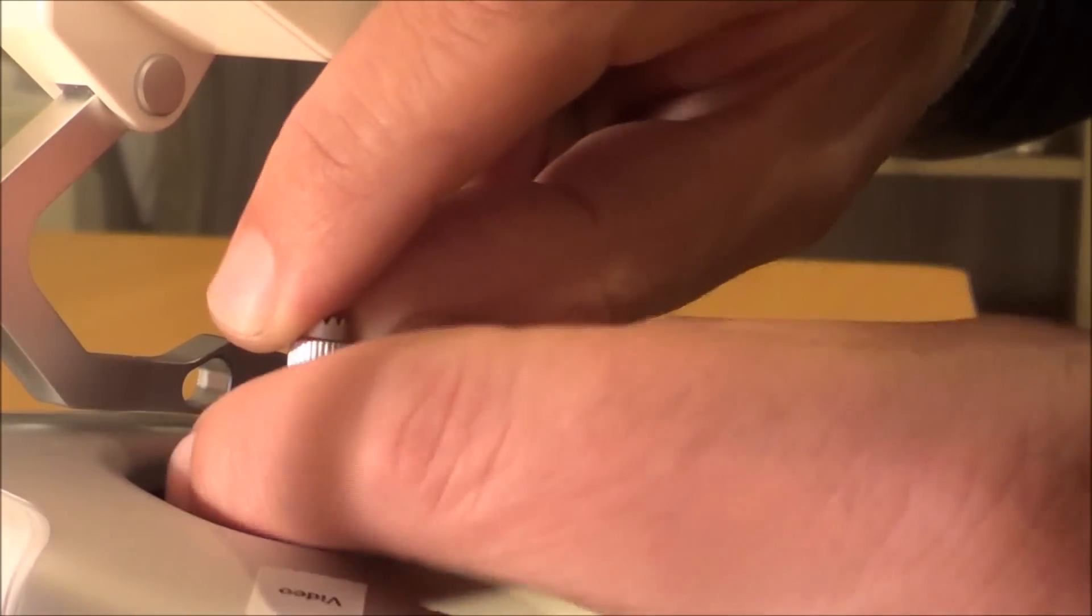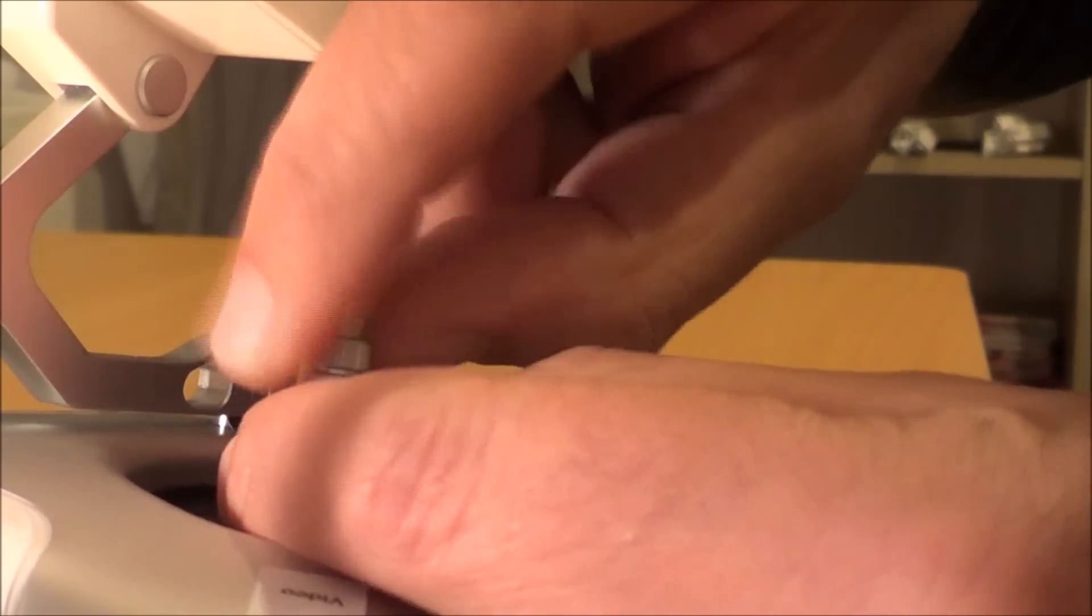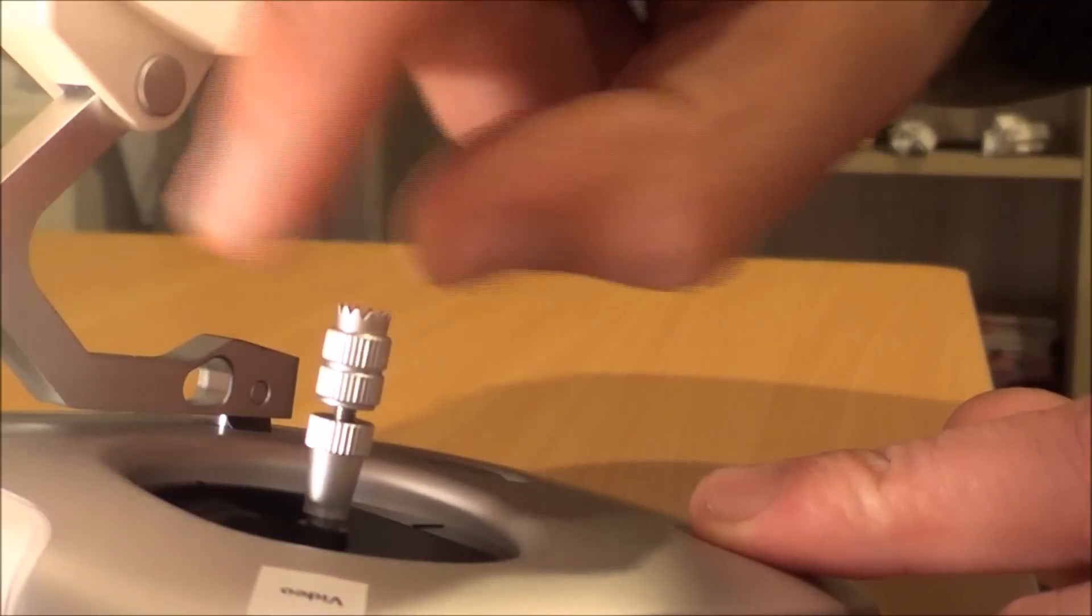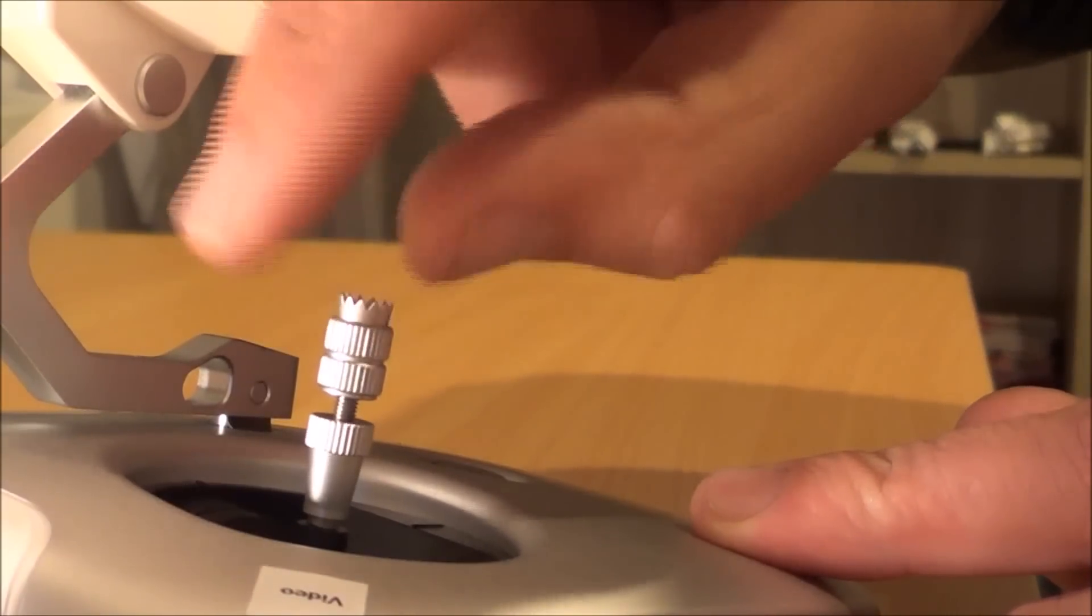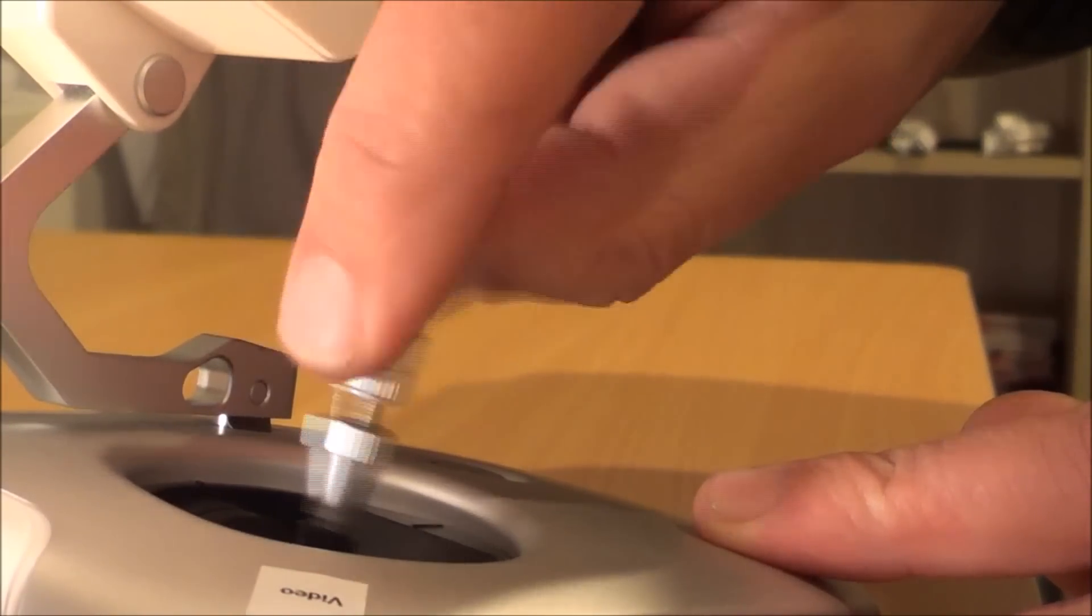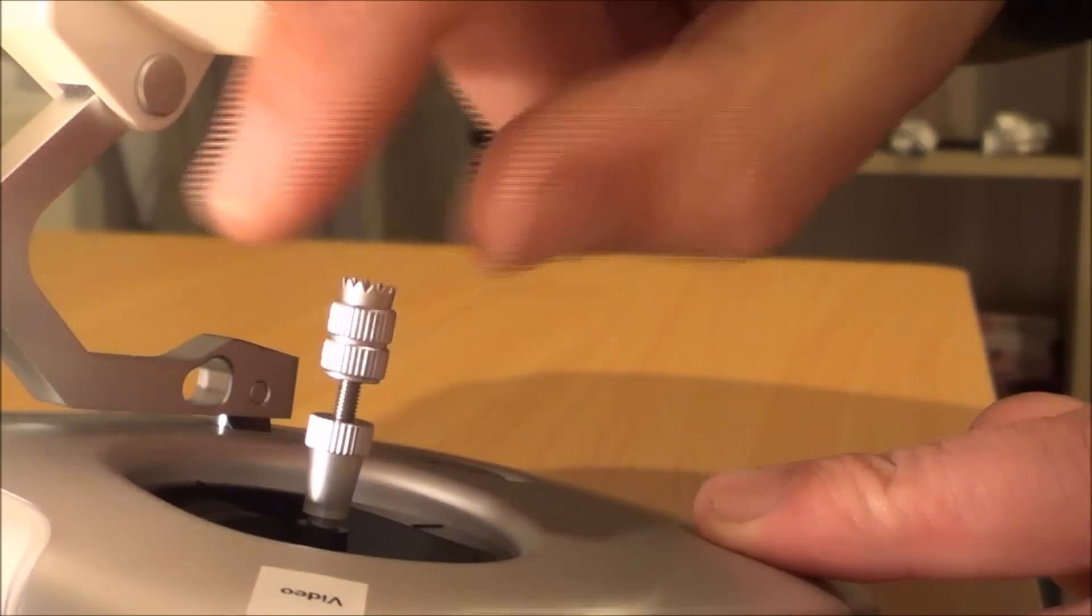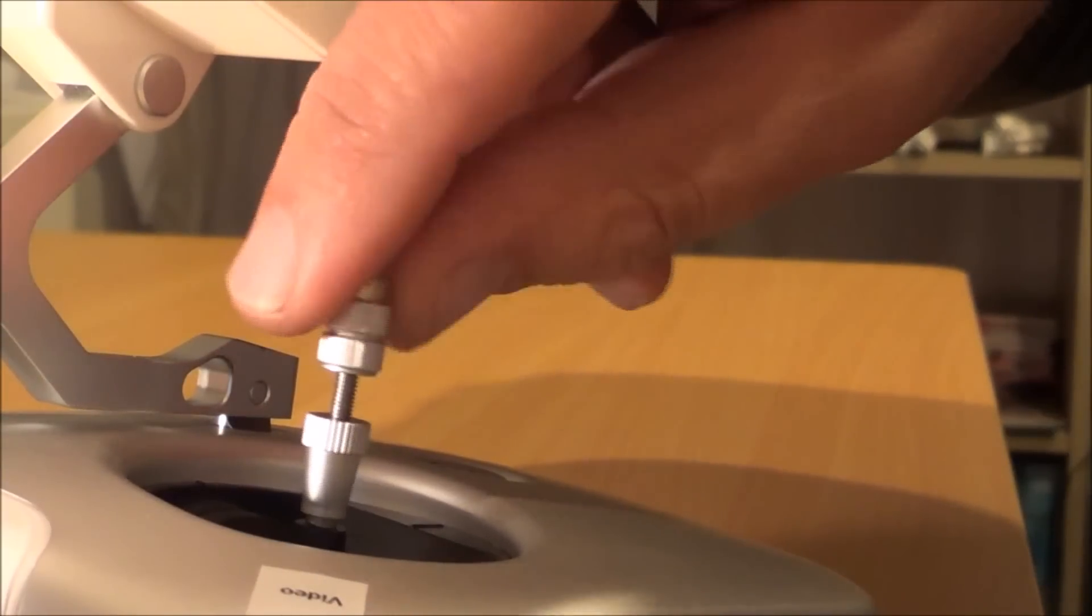Okay, so these sticks, the top knurled part is actually in two pieces. As you can see, you can just undo the thread on the top half, which gives the stick a great deal more height, I think about 10mm.